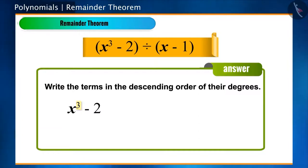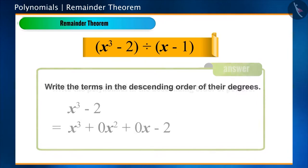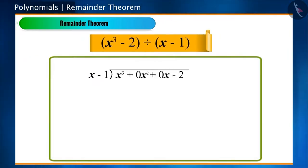But if we look closely, we will notice that terms with x square and x are missing. In such a situation, we can write those terms by taking their coefficient as 0. And now solving this would be easy.